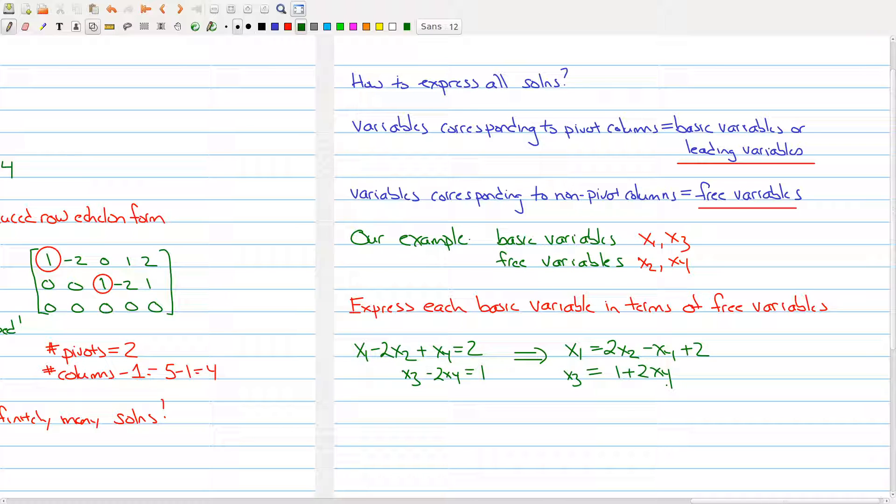Now the name free here for free variables tells me that x2 and x4 can be anything I want. I can have complete freedom over what values x2 and x4 is, but once I pick those two numbers, x1 and x3 are forced. So let me write that down. x2 and x4 can be arbitrary. So sometimes what we do is the following: we let x2 be represented by a variable r, and let's say x4 is t.